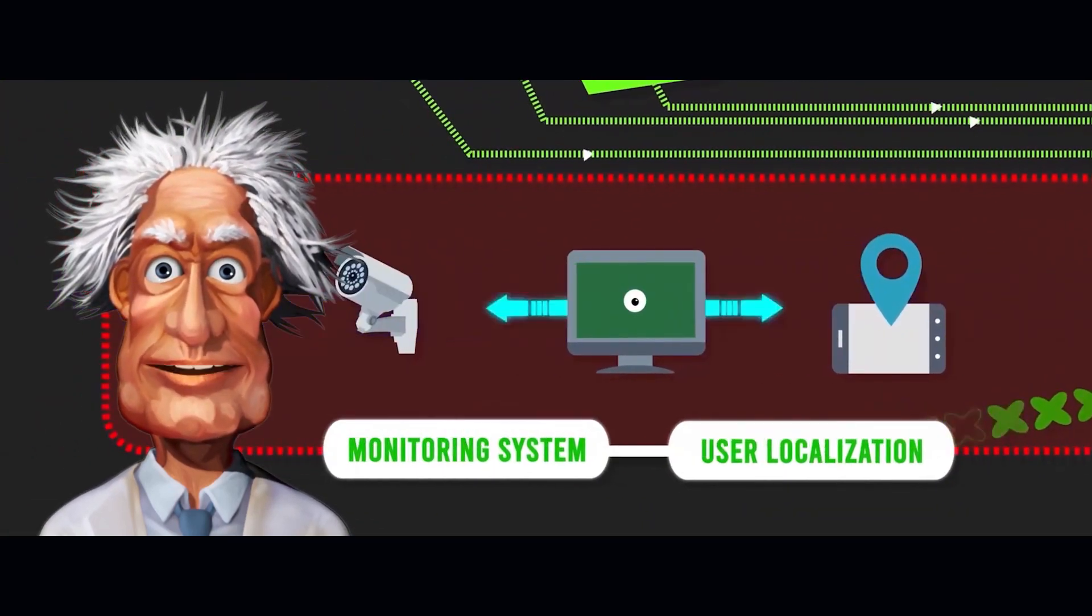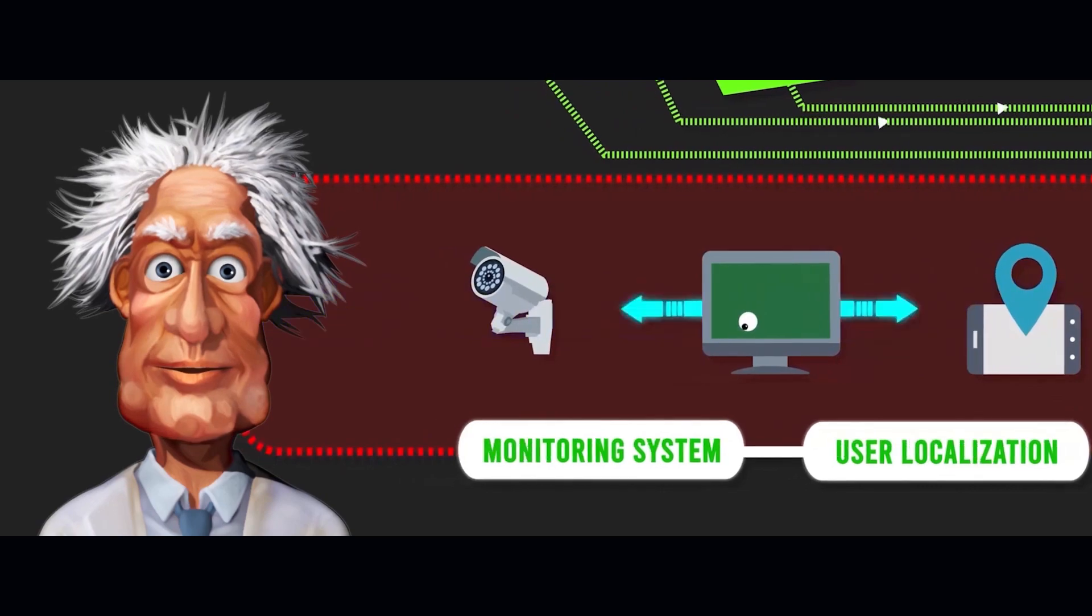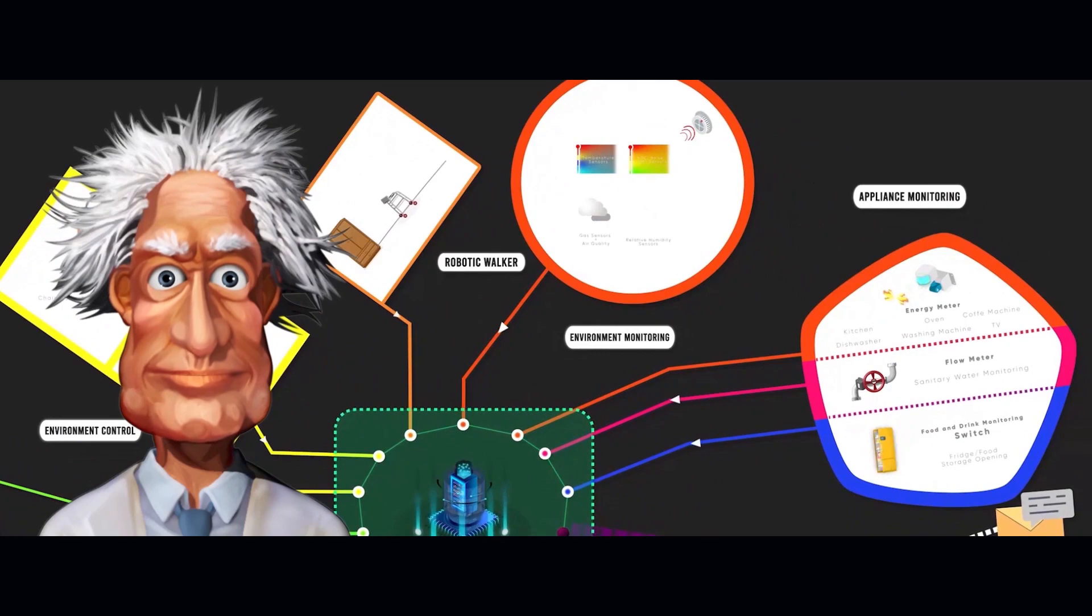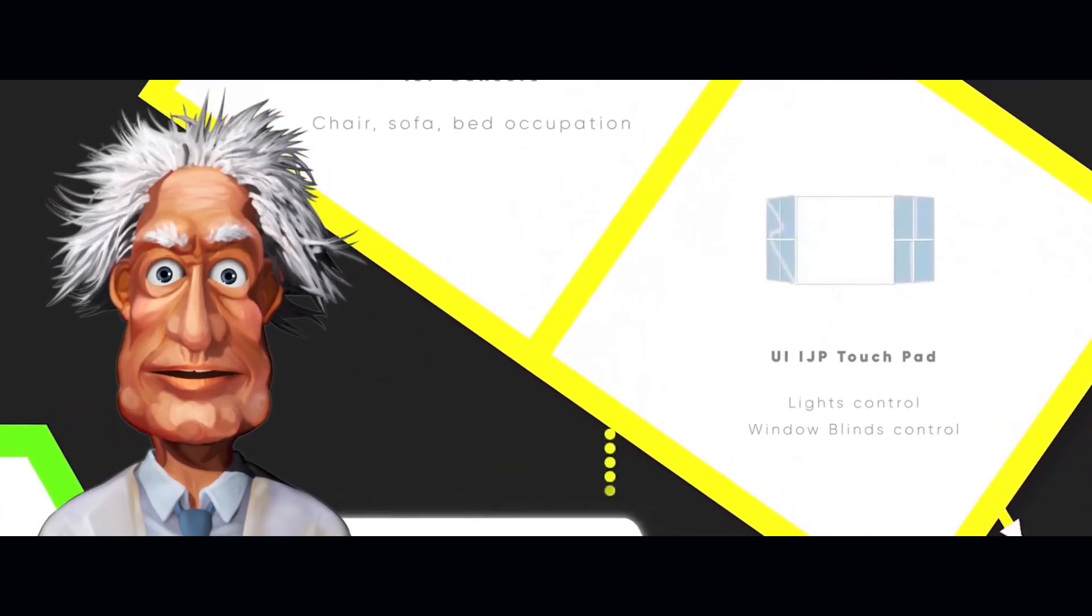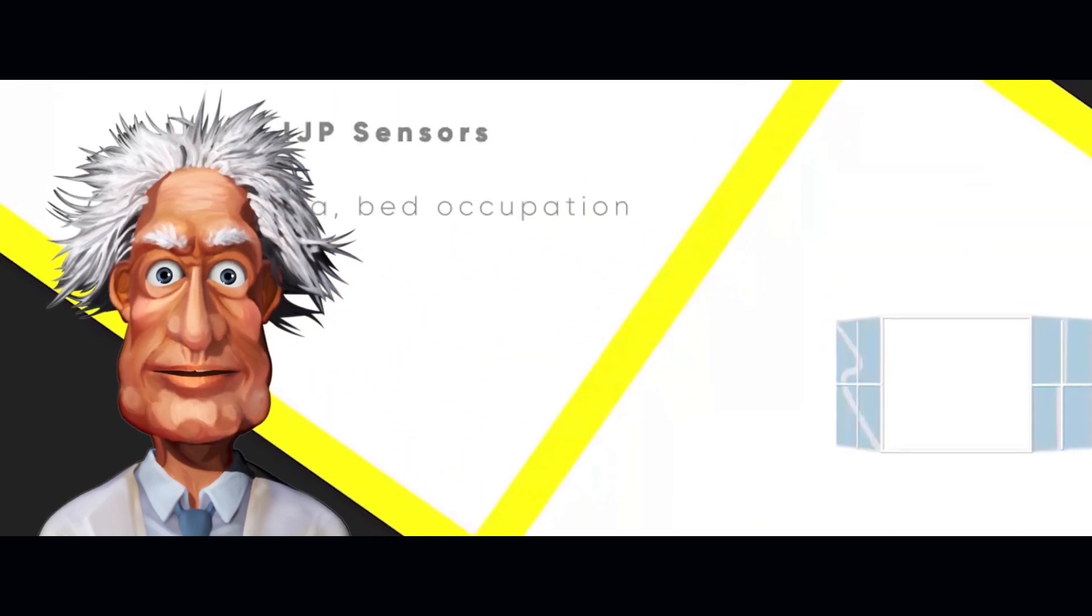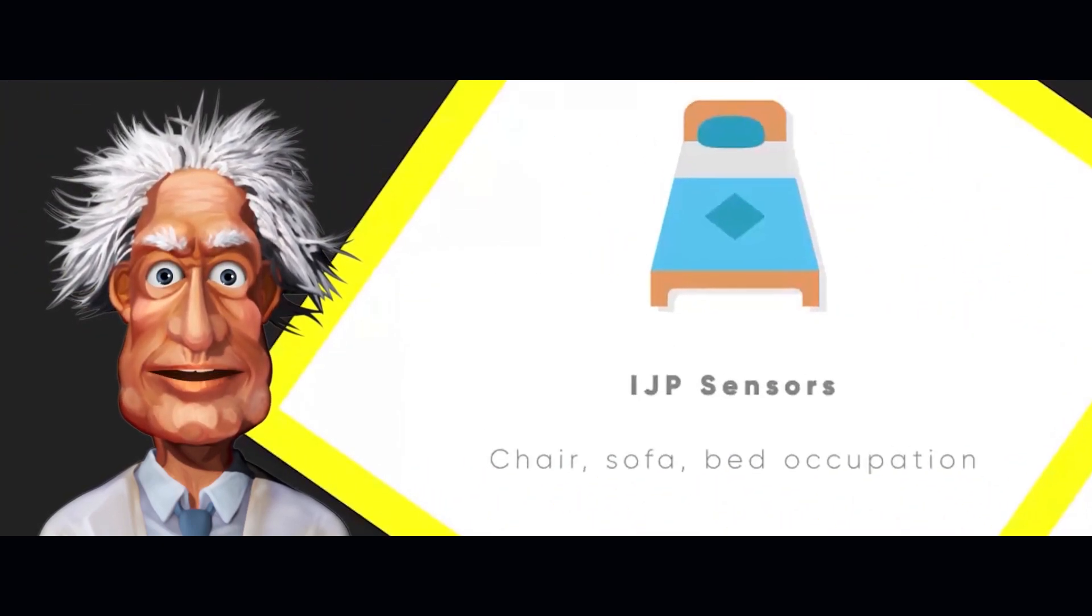Data include users' geolocation and monitoring systems. We have different types of sensors. Those for environmental control include lights, windows, chairs, sofas, and beds.